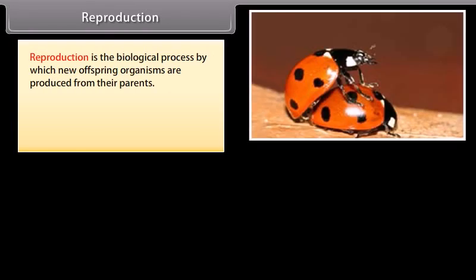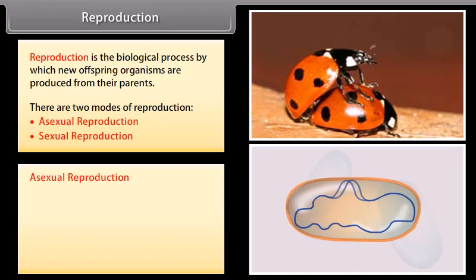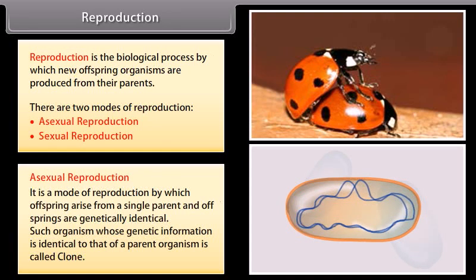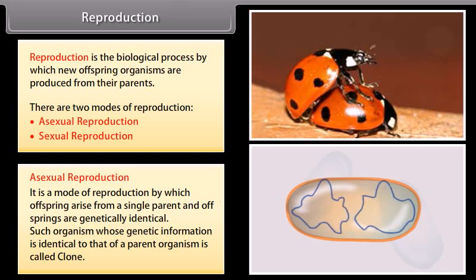Reproduction is the biological process by which new offspring organisms are produced from their parents. There are two modes of reproduction: asexual reproduction and sexual reproduction. Asexual reproduction is the mode of reproduction by which offspring arises from a single parent, and offspring are genetically identical.